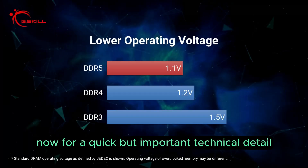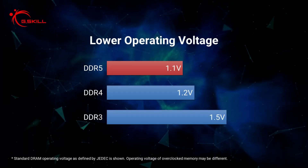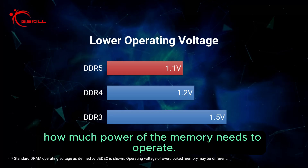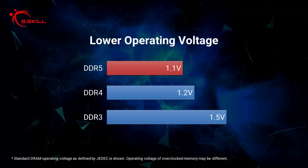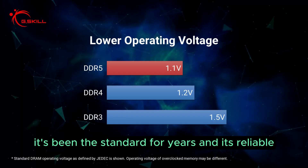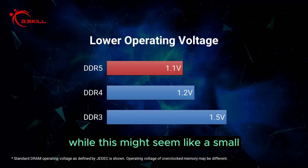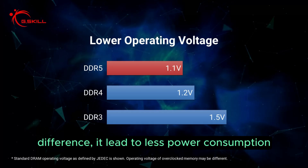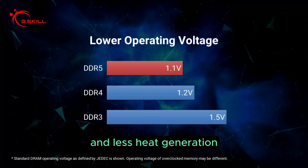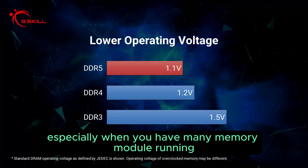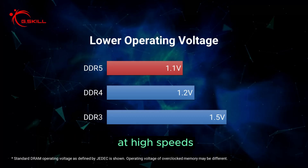Now for a quick but important technical detail on voltage: this is about how much power the memory needs to operate. DDR4 runs at 1.2 volts — it's been the standard for years and it's reliable. DDR5 is more efficient, running at 1.1 volts. While this might seem like a small difference, it leads to less power consumption and less heat generation, especially when you have many memory modules running at high speeds.